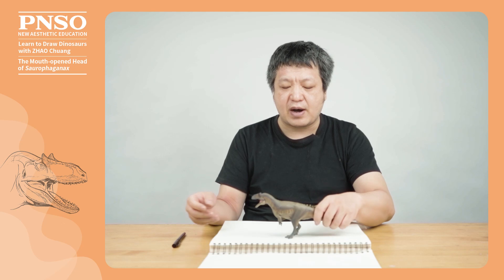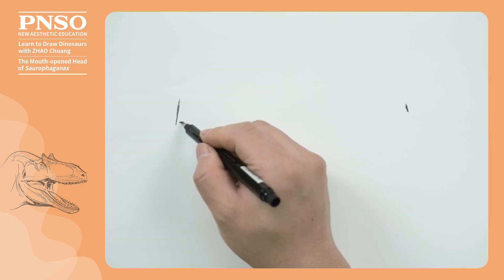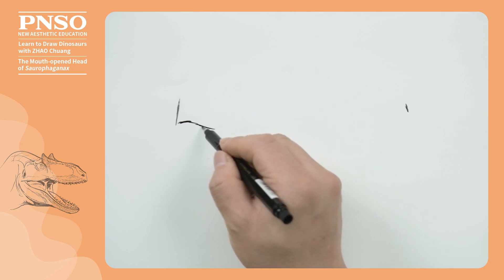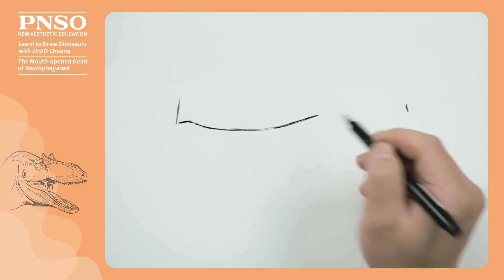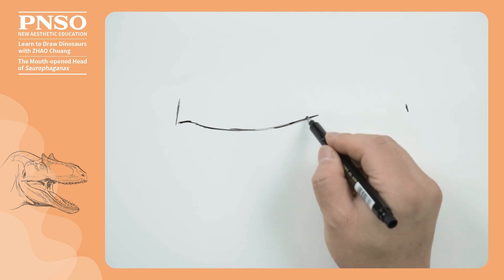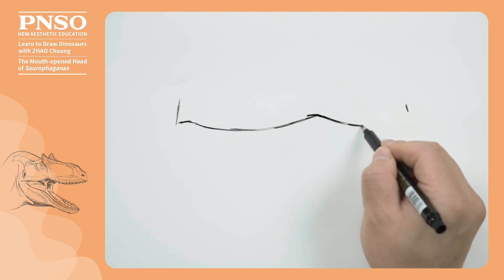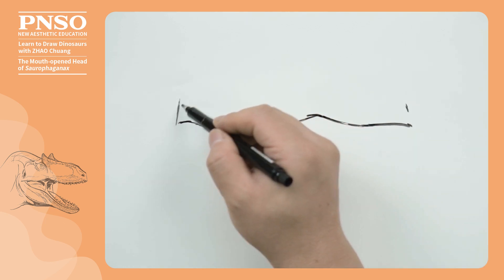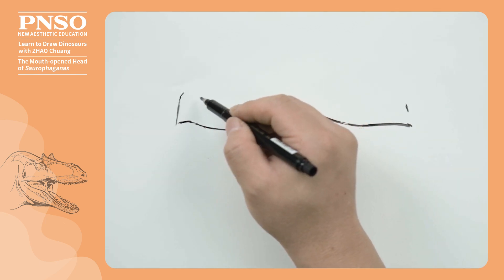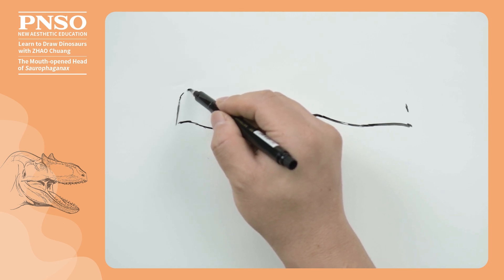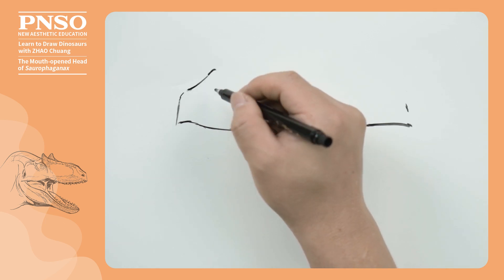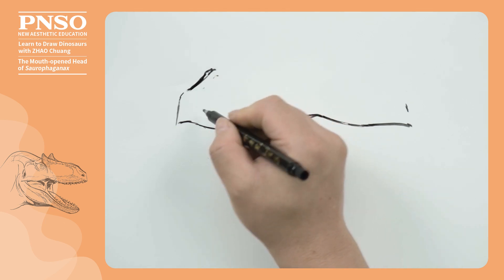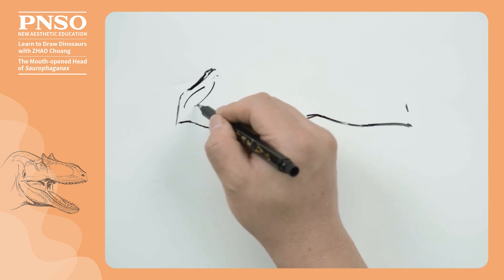Now let's draw the head of Saurophaginax. With its mouth open, we start from the tip of its mouth and outline its upper lip — a line curving downward like this. Here is the jugal bone. Next, let's draw its nose. Here is its nose and nostril.